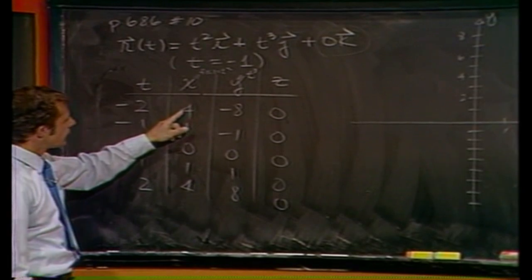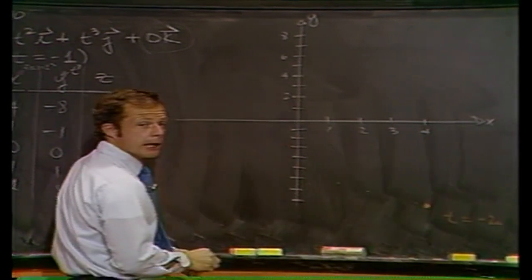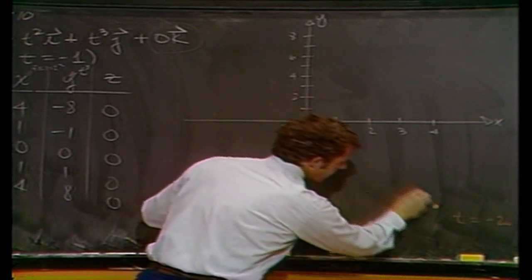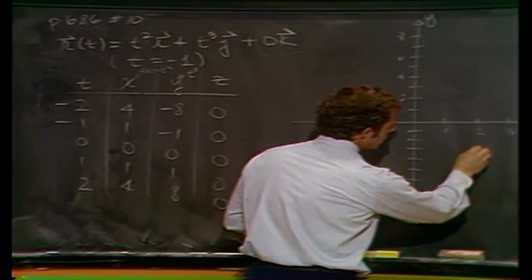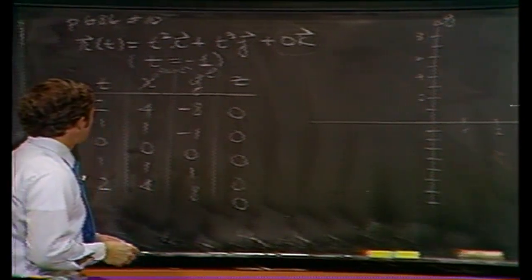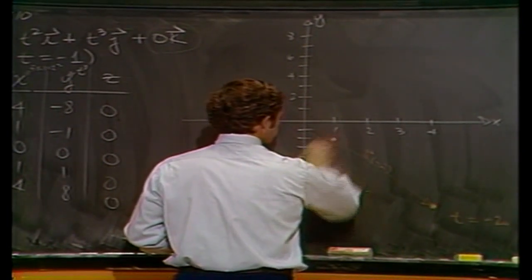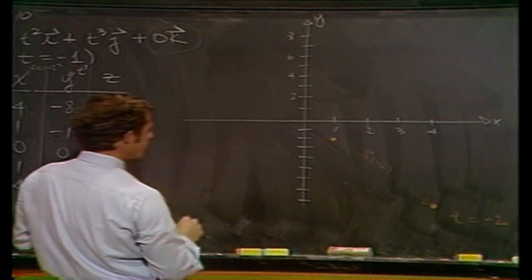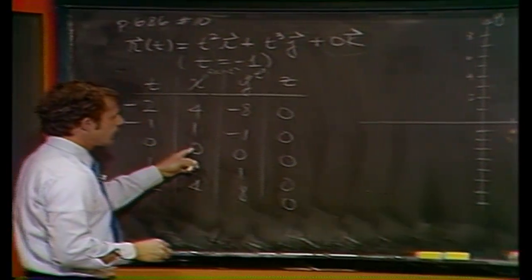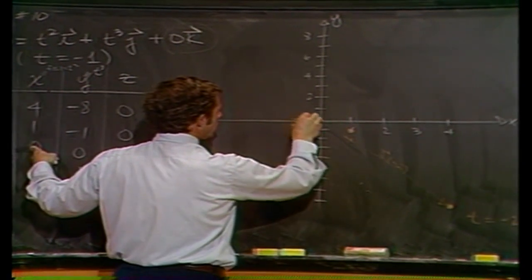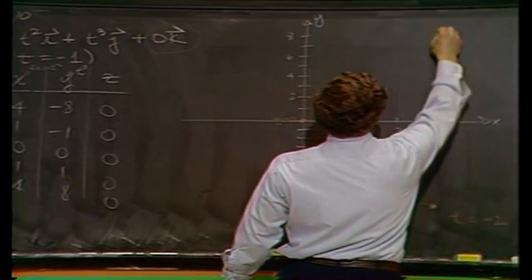Let's plot our points. At t equals minus 2, it's 4 and minus 8. And the vector, let's just put it in lightly, it's pointing in that particular position at that particular time. There's r at minus 2. Next one is x equals 1, y equals minus 1. Unfortunately, it's in the same line there. Right there. Shouldn't be in the same line. So that's there. We're at the origin at t equals 0. And then it's at 1, 1 above the x-axis and 4, 8 a little bit later on.